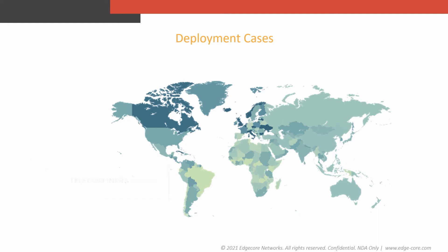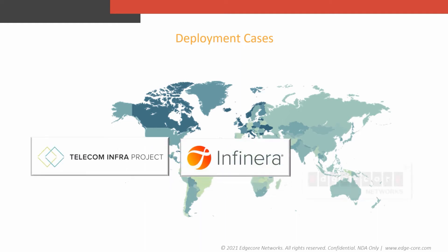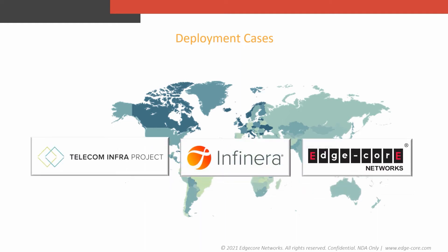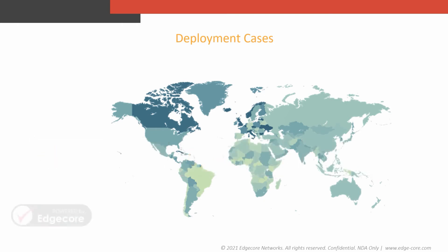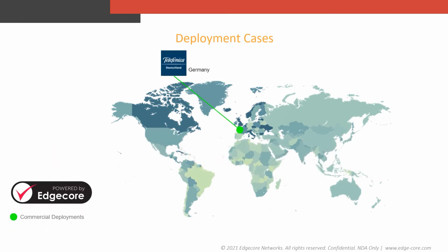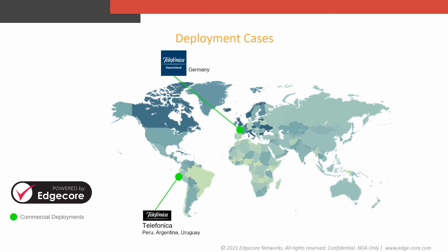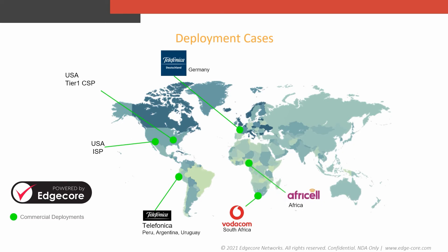In late 2019, TIP, Infinera, and EdgeCode Networks marked the milestone in open mobile transport with the first DCSG commercial deployment in Telefónica Germany. And in 2020, the deployment has expanded to Peru and Ecuador.